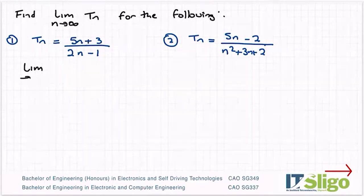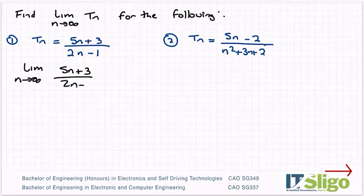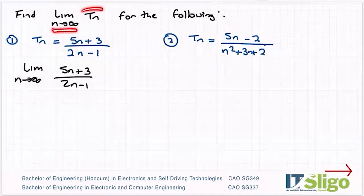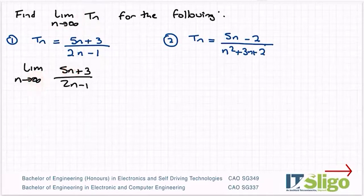The limit as n tends to infinity of 5n plus 3 over 2n minus 1. So basically I've just taken this down and instead of Tn I've put in what they've given me. So n is approaching infinity, so n is a very, very big number.